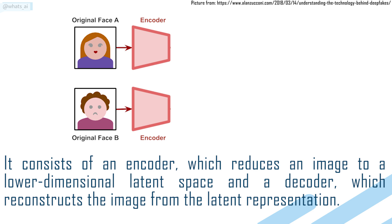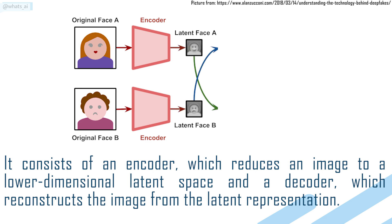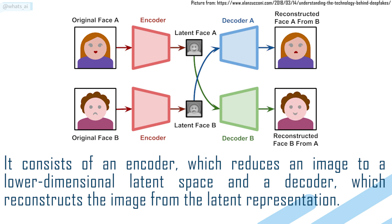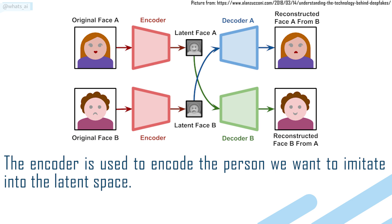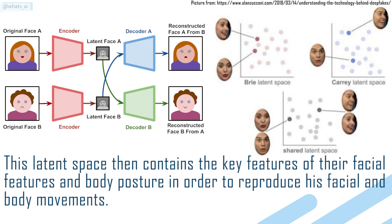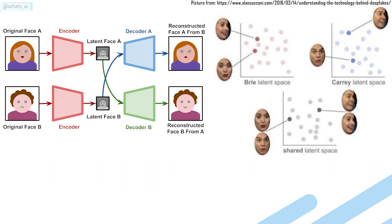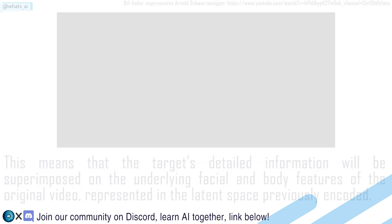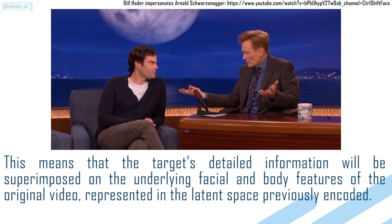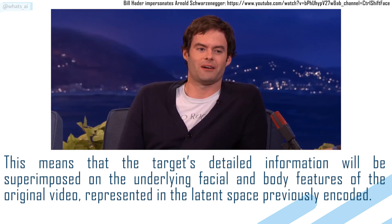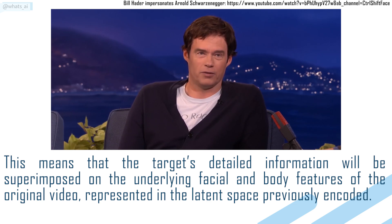It consists of an encoder, which reduces an image to a lower dimensional latent space, and a decoder, which reconstructs the image from the latent representation. The encoder is used to encode the person we want to imitate into the latent space. This latent space then contains the key features of their facial features and body posture in order to reproduce their facial and body movements. Then, a model trained specifically for the target video is used to decode this latent space, meaning the target's detailed information will be superimposed on the underlying facial and body features of the original video represented in the latent space previously encoded.